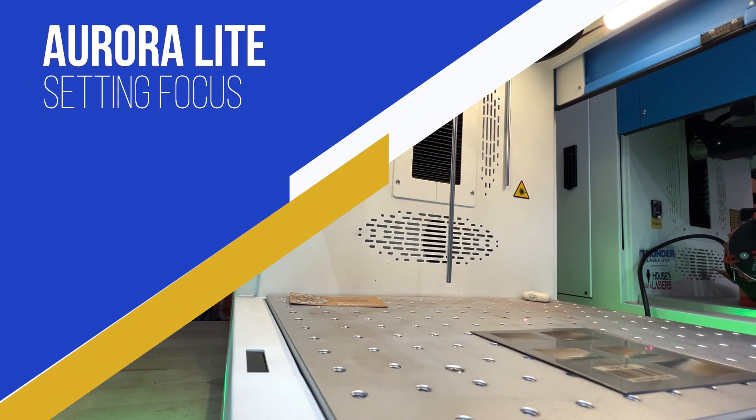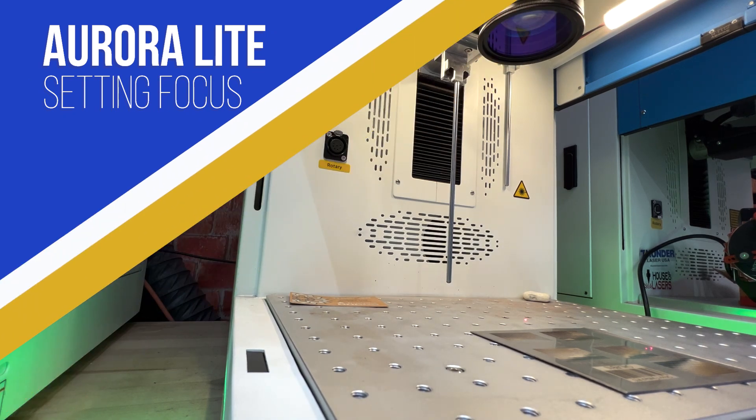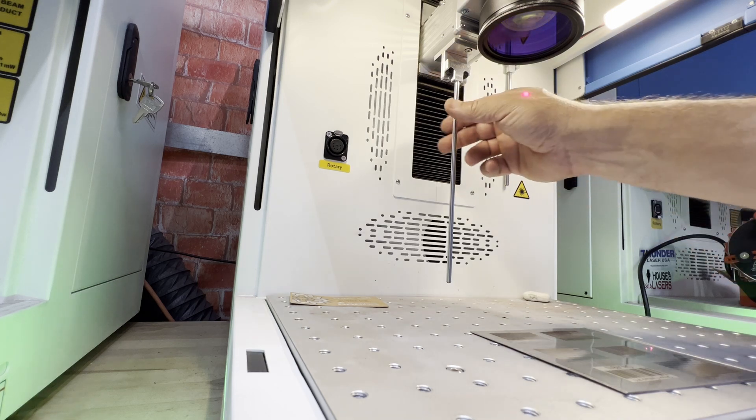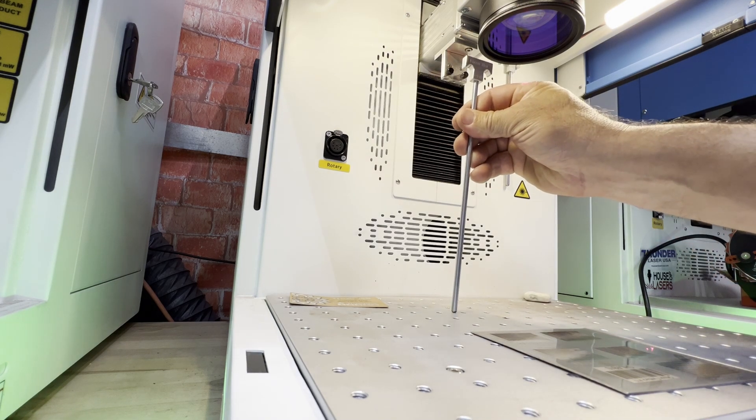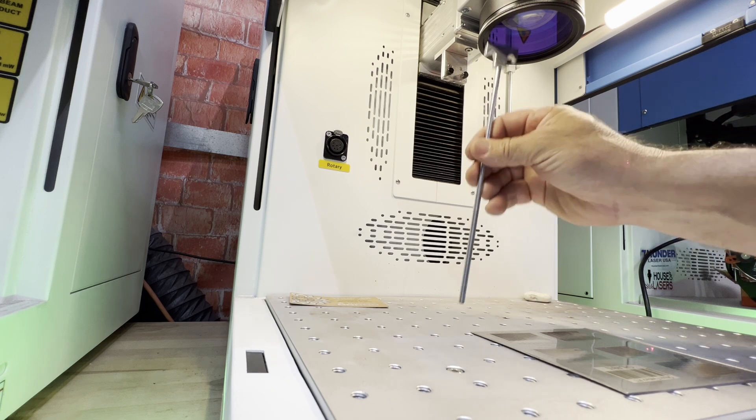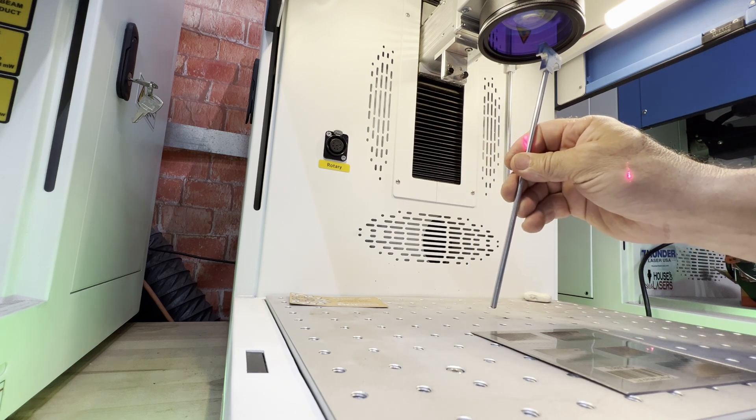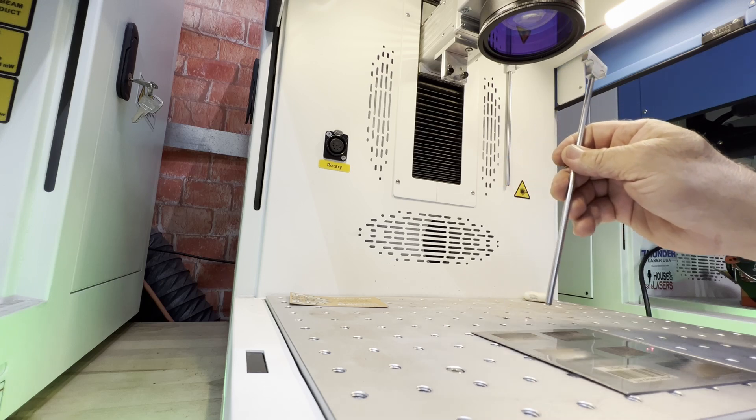Hey everybody, this is Chris with Thunder Laser. Congratulations on getting your Aurora light series. This deploys a couple of different new features that we're not used to, one of them being the T-bar to do your focal distance. We're going to cover that first and how to test this and how to get this calibrated correctly for the proper focal distance.